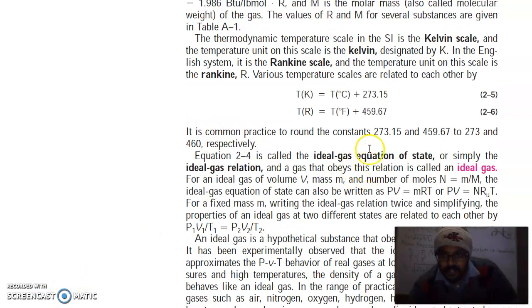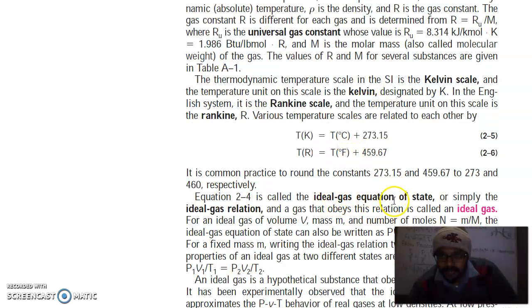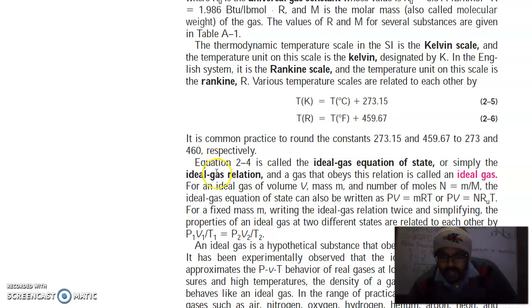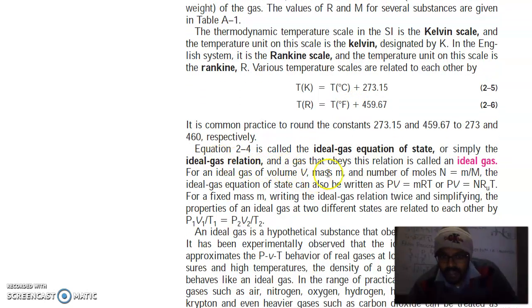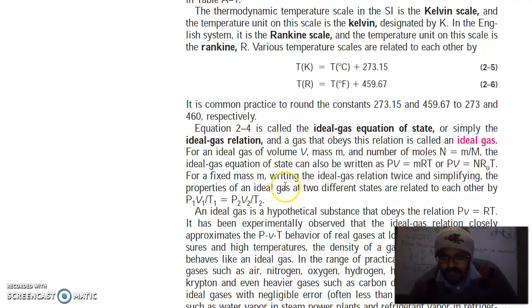The equation PV equals RT is called the ideal gas equation of state or simply the ideal gas relation. And the gas that obeys this relation is called an ideal gas. The ideal gas equation of state can also be written as PV equals MRT. For a fixed mass, writing the ideal gas relation twice and simplifying, the properties of an ideal gas at two different states are related to each other by P1V1 over T1 equals P2V2 over T2.